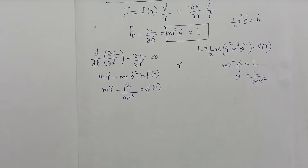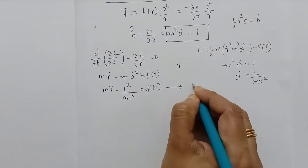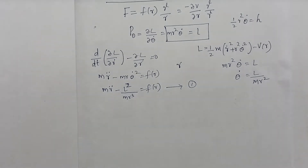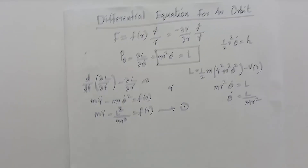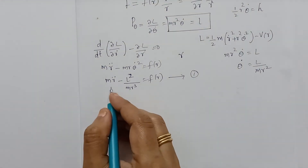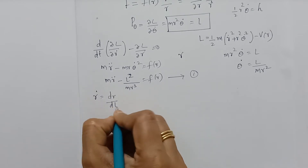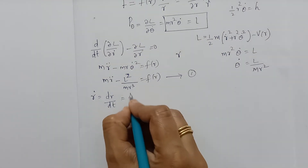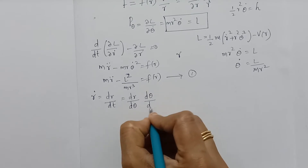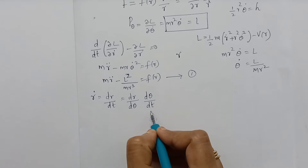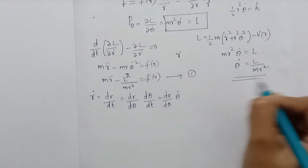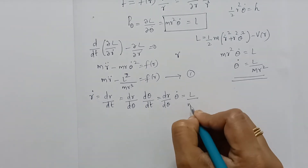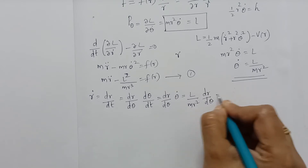Let us consider that equation as equation number 1. We know that Ṙ = dR/dt. We can write dR/dt as (dR/dθ)·θ̇. Since θ̇ = L/MR², we can write Ṙ = (L/MR²)·(dR/dθ). Let this be equation number 2.